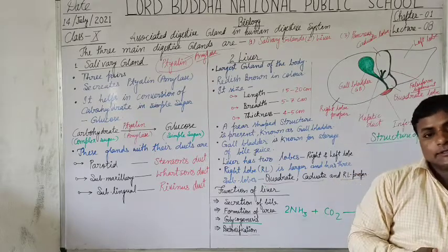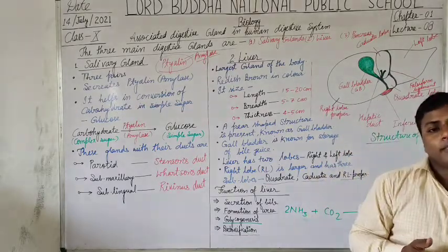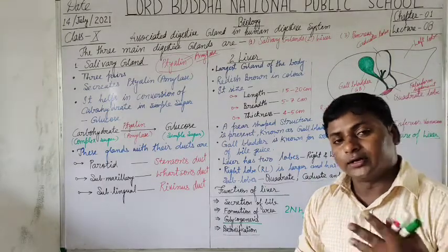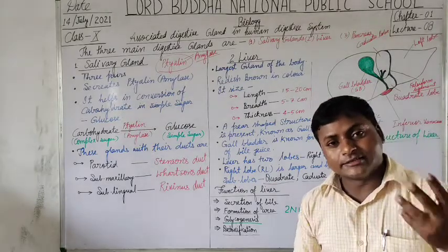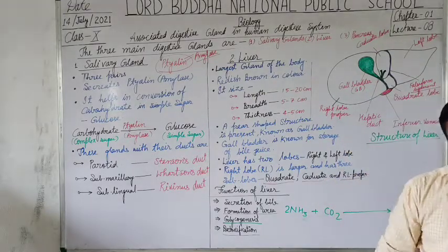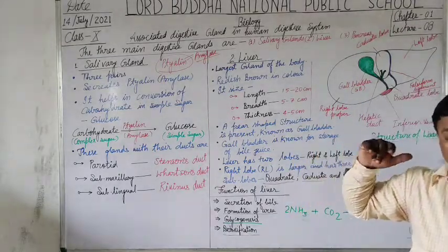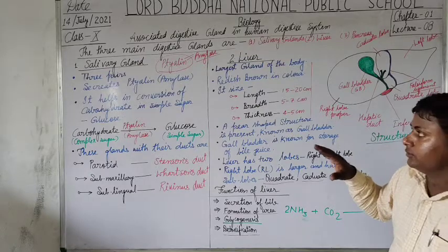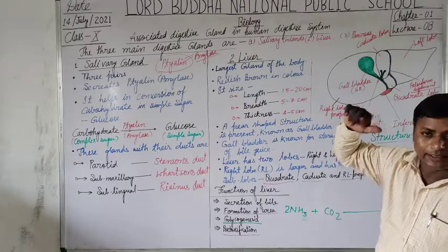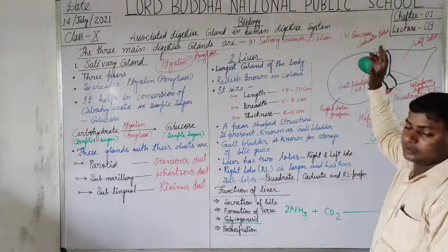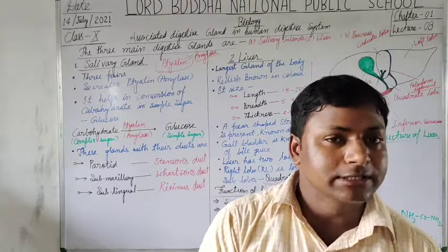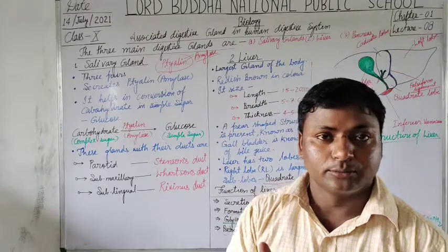Some other functions of the liver: the liver also removes and digests dead RBCs, and it also stores healthy and live RBCs. I hope all of you clearly understood the two digestive glands associated with the human gastrointestinal tract. In the next video lecture, we will discuss about the pancreas, which is the mixed gland. Thanks for joining today's lecture.